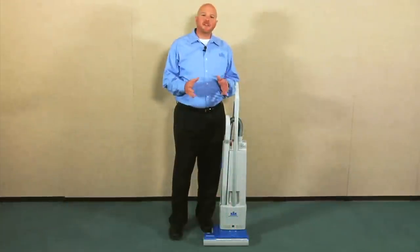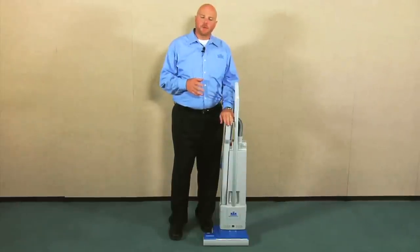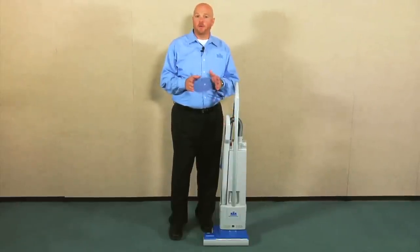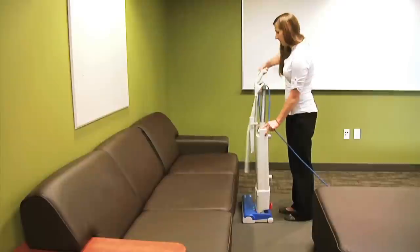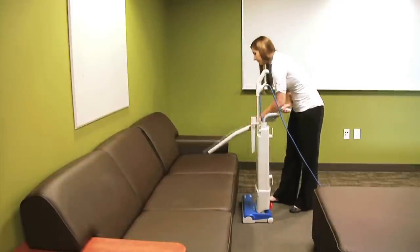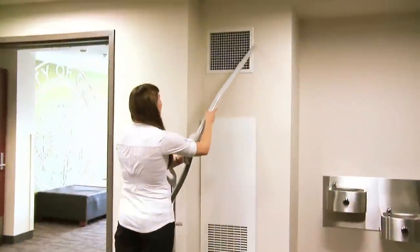Another new feature on the Versimatic is the handle which replaces just the hose with the small nozzle. The handle is great because now you can use it to do crevice work, to do corners and edges along walls.